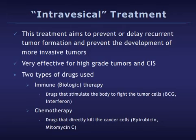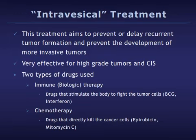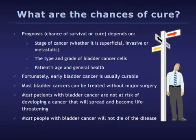Two types of drugs are used for intravesical treatment. Immune or biologic therapy uses drugs that stimulate the body to fight the tumor cells. The most common drug used in this way is BCG, or Bacille Calmette-Guérin, which is an inactive form of the tuberculosis bacterium. Interferon is another commonly used and very effective drug, and may be recommended if BCG alone is not effective. Chemotherapy drugs can also be placed directly into the bladder; these work by directly killing cancer cells and can have more toxic side effects. The most commonly used drugs in this class are epirubicin and mitomycin C.